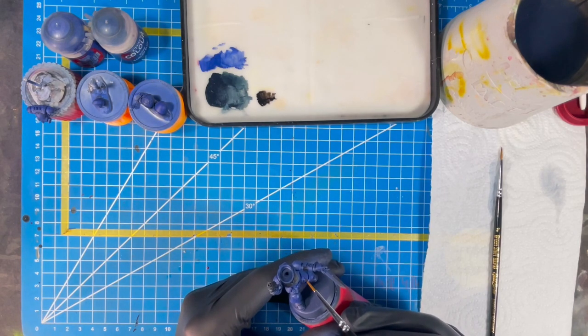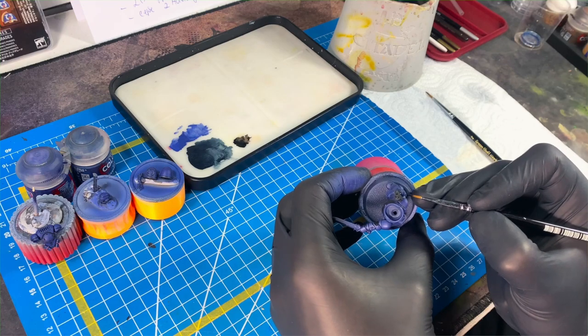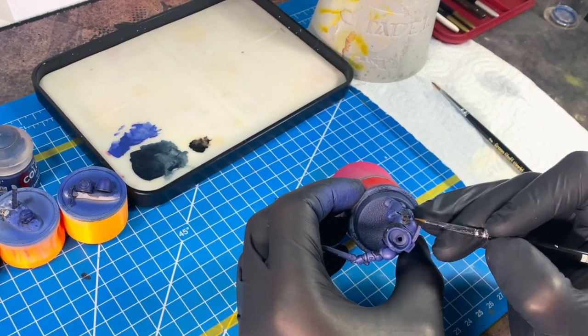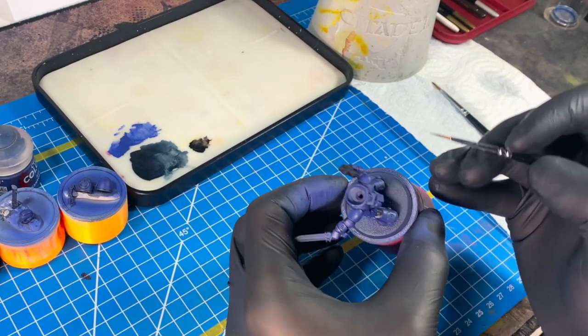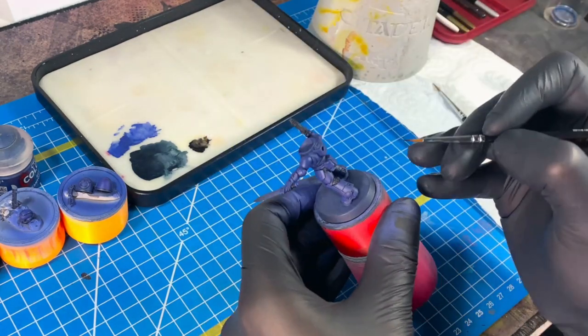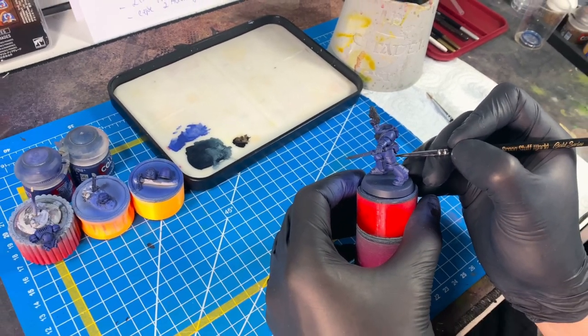So paint black the belt, the joints on the armor, your gun, your holsters—all the parts that shouldn't be blue should be now painted in black.